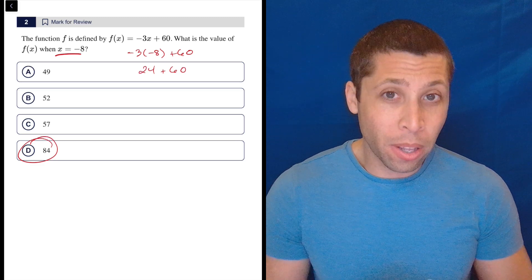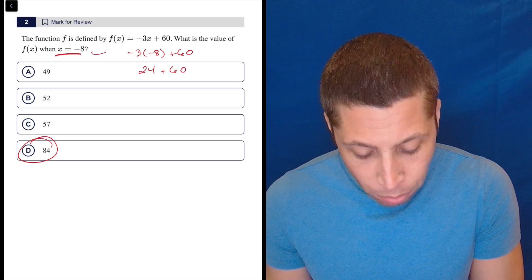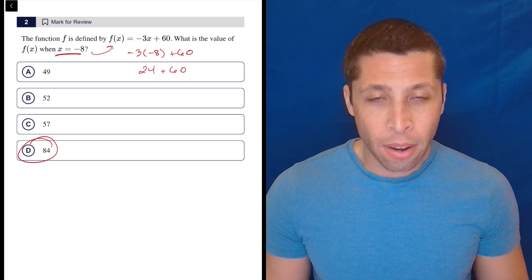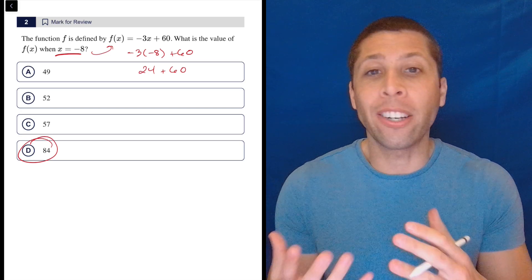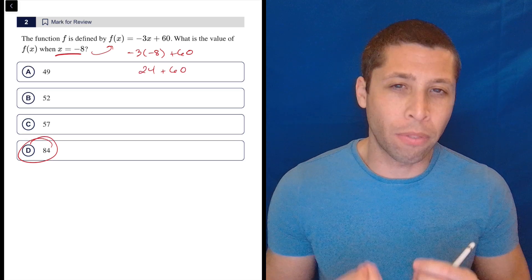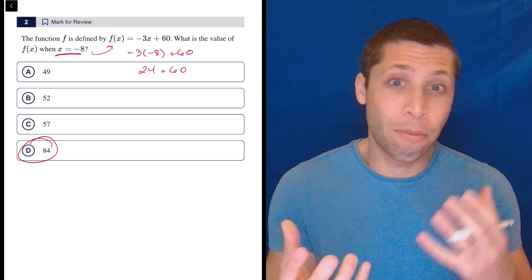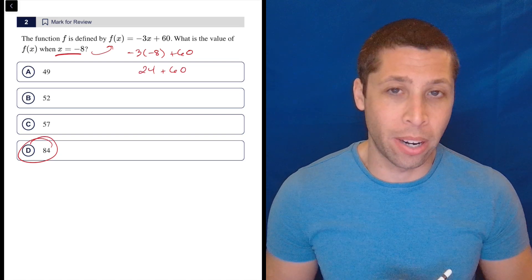Now one of the things that people struggle with when they're first learning function notation is how do we make sense of this f(x), because you learn that letters are variables that represent numbers. You kind of get confused because at first function notation looks like we're multiplying this letter f by this letter x, but that's not what it is.